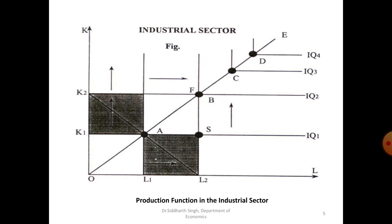The production function of the industrial sector is represented in this figure. IQ1 represents the combination of OL units of labor and OK1 units of capital, which produces a certain level of output. IQ2, IQ3, and IQ4 represent higher levels of output, which are only possible if capital and labor are increased in the same proportion. Thus, points A, B, C, and D show fixed combinations of capital and labor used to produce different levels of output. The line OE represents the expansion path in the industrial sector, and its slope represents constant factor proportions. The line K2L2 shows the production process is capital intensive.